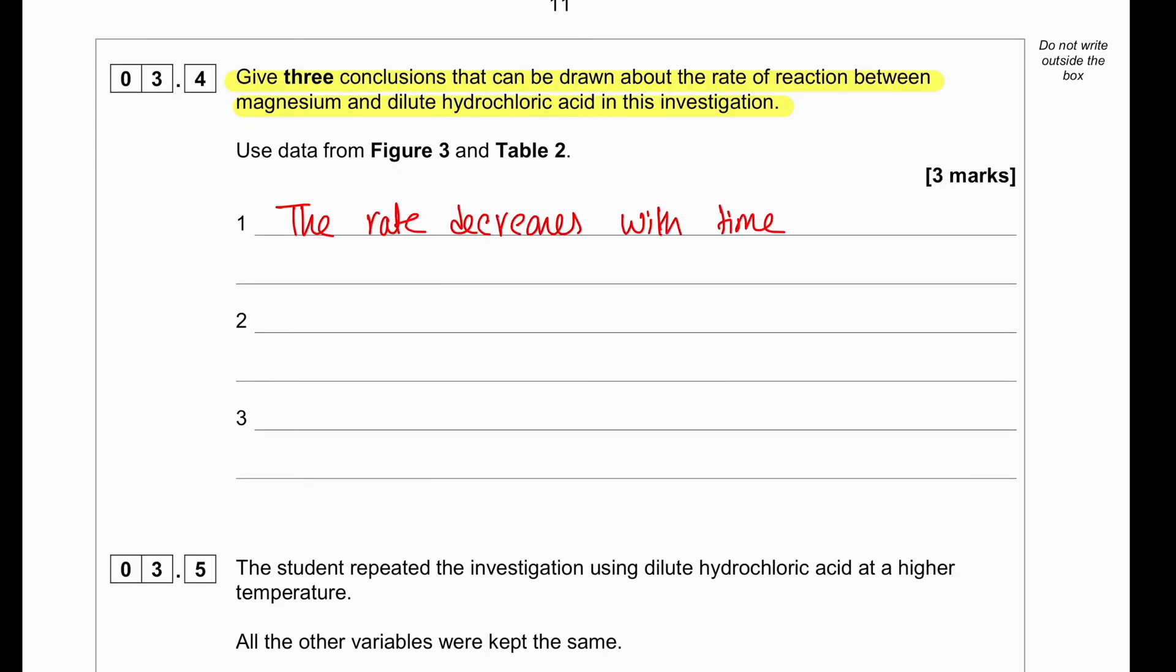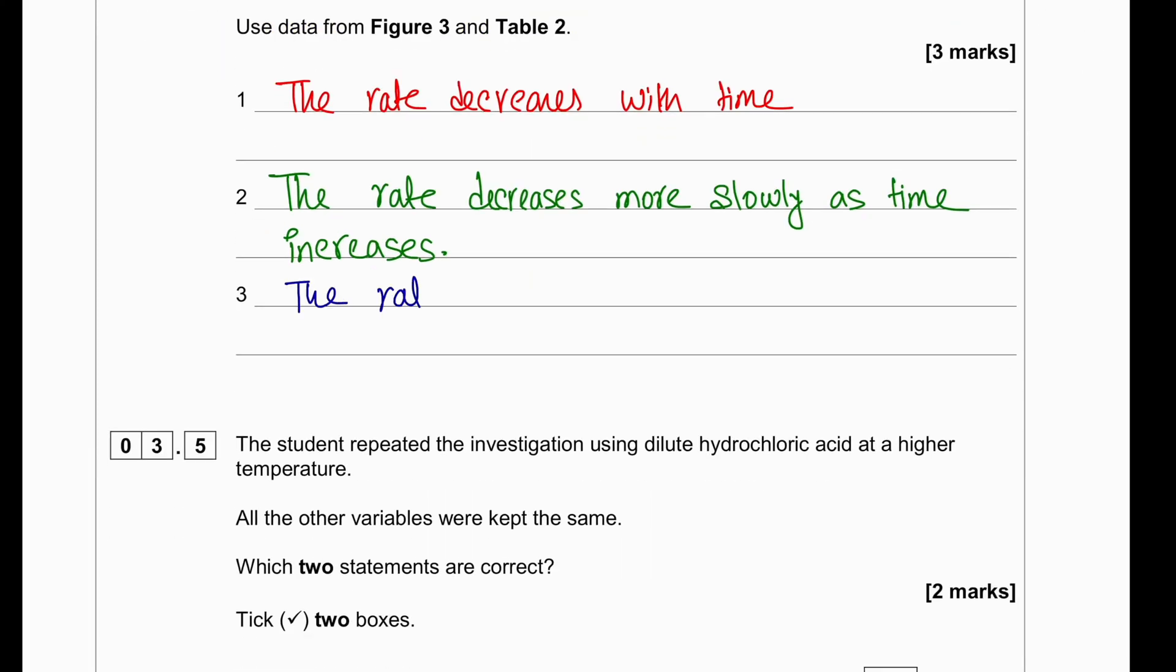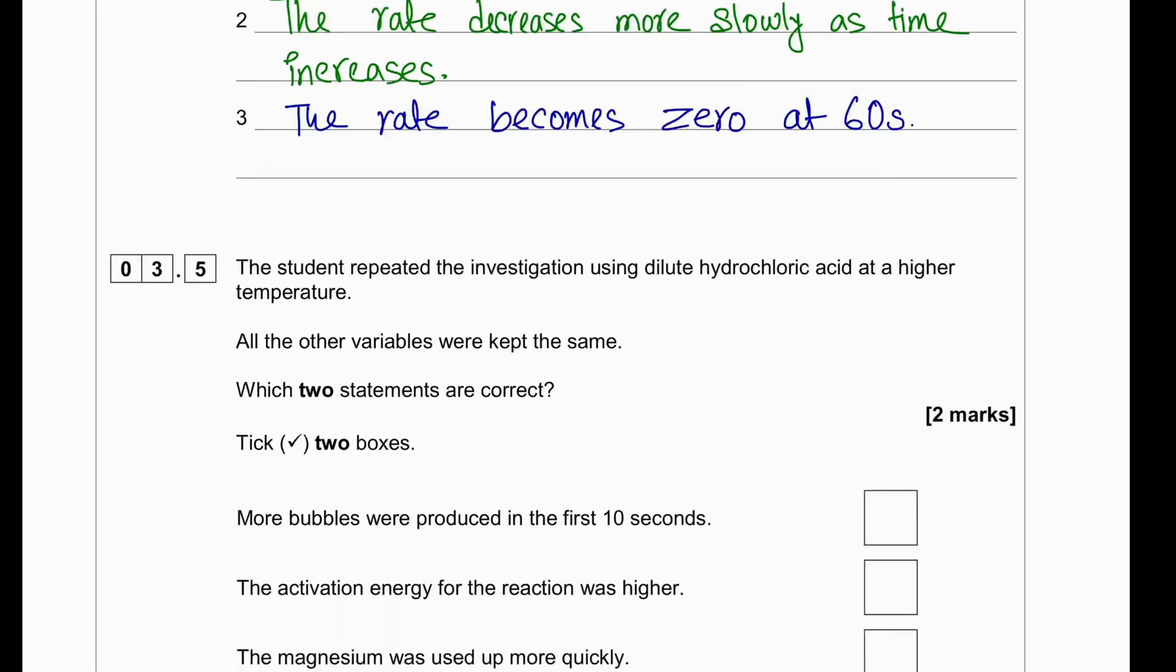Give three conclusions that can be drawn about the rate of reaction between magnesium and dilute hydrochloric acid in this investigation. Use figure 3 and table 2. So first of all, what we can conclude from figure 3 is that it increases as the reaction proceeds and the rate decreases more slowly as the time increases and then eventually at time equals to 60 seconds, we see the rate becomes completely zero.